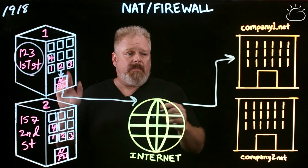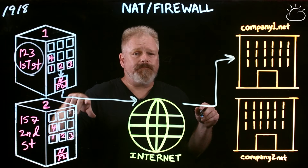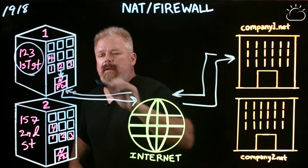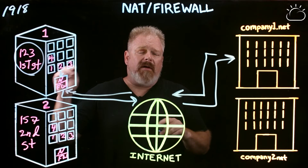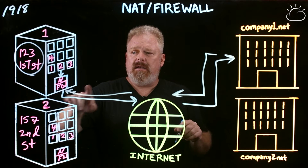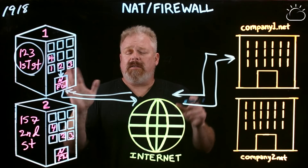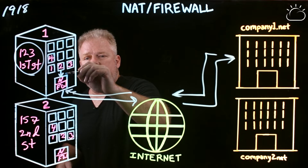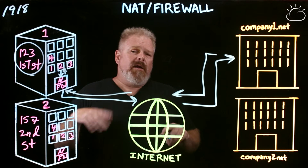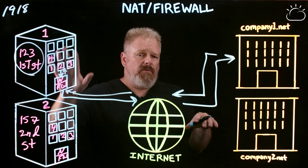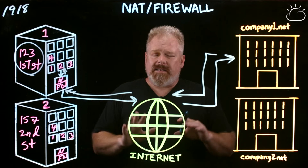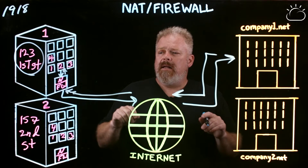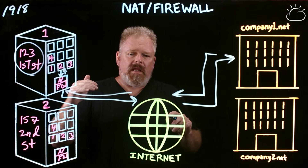As soon as company1.net sends a response, it's going to send it not to apartment 2 but to 123 1st Street. The NATing device actually keeps track of what's going out and the corresponding response. It knows that the response to 123 1st Street corresponds to apartment 2 — it knows that person lives at apartment 2. Here's the key: company1 doesn't know that that person lives at apartment 2. All it knows is 123 1st Street, essentially obscuring the final address of that person. So by that, it's kind of a security device because it protects that person.